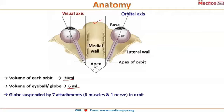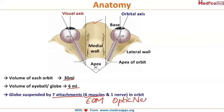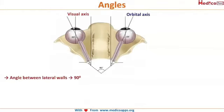Since the eyeball is small relative to the orbit, something is needed to suspend it within the cavity and keep it in place. It therefore has 7 attachments: 6 extra-ocular muscles — the recti and the obliques — and the optic nerve, making 7 attachments in total which keep the eyeball within the orbit.